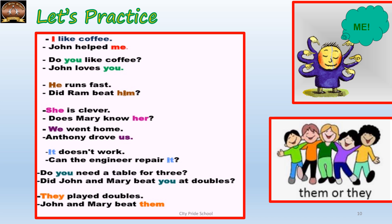Here are examples to understand subject and object pronouns clearly. 'I like coffee' — I is subject. 'John helped me' — me is object. 'Do you like coffee?' — you is subject. 'John loves you' — you is object. 'He runs fast' — he is subject. 'Did Ram beat him?' — him is object. 'She is clever' — she is subject. 'Does Mary know her?' — her is object. 'We went home' — we is subject. 'Anthony drove us' — us is object. 'It doesn't work' — it is subject. 'Can the engineer repair it?' — it is object. 'They played doubles' — they is subject. 'John and Mary beat them' — them is object.